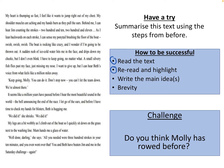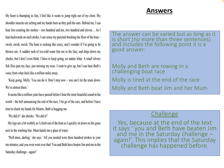What I want you to do now is read the next text, re-read it and highlight any key bits of information, then write down the main ideas and summarize the text. If you've managed to summarize the text, think about: do you think Molly has rowed before? Your answer could be varied — there are so many different ones — but stick to these main points: Molly and Beth are rowing in a boat race, Molly's really tired at the end of the race, and Molly and Beth beat Jim and her mum. Your answer needs something to do with these three points.